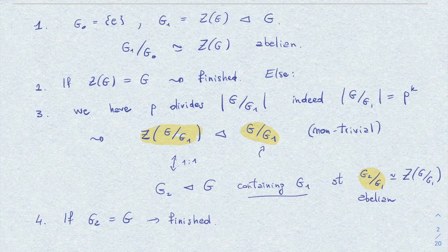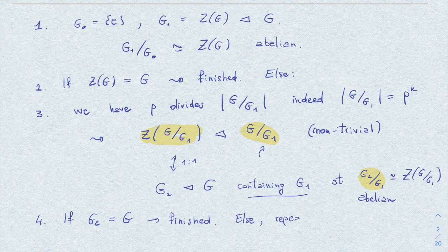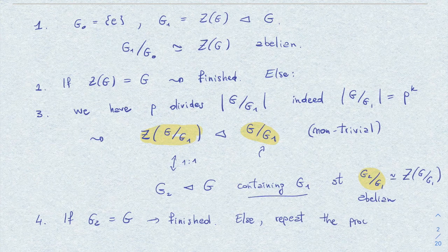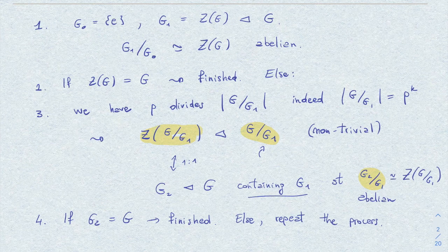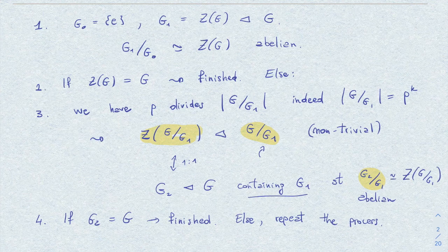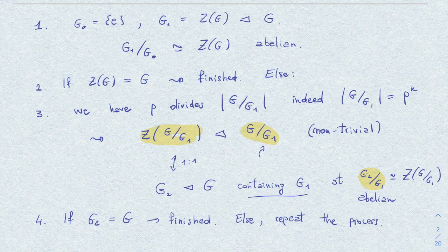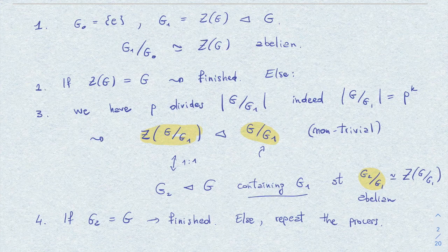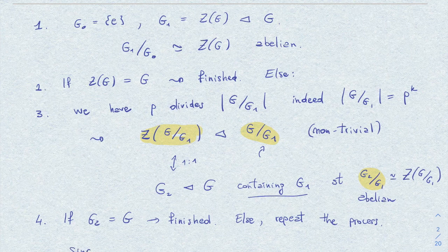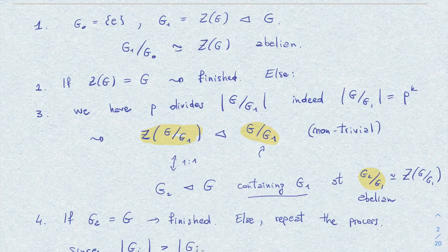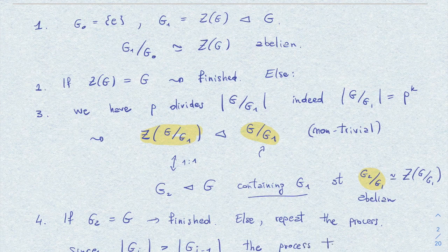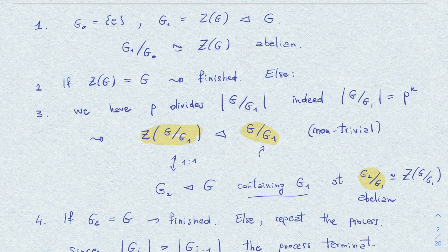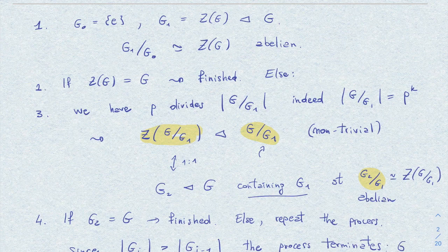Otherwise, we repeat this process. In fact, this is an algorithm in the sense that in a finite number of steps it has to come to an end, and there will eventually be a G_r given by this successive construction which has to be equal to G. This is simply by the fact that the order of this group increases with each step. The order of G_i will be always strictly greater than the order of G_{i-1}, so the process terminates. In other words, we have at some point some group G_r equal to G.